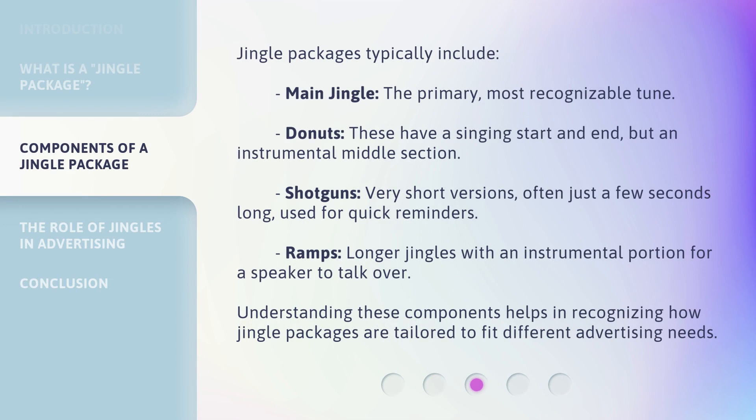Jingle Packages typically include: the Main Jingle, the primary and most recognizable tune; Donuts, which have a singing start and end but an instrumental middle section; Shotguns, very short versions often just a few seconds long, used for quick reminders; and Ramps, longer jingles with an instrumental portion for a speaker to talk over. Understanding these components helps in recognizing how jingle packages are tailored to fit different advertising needs.